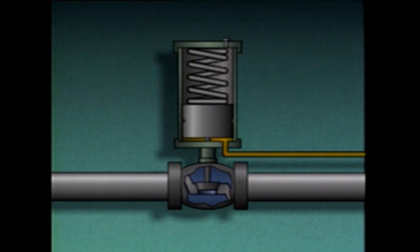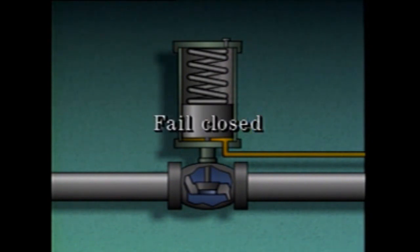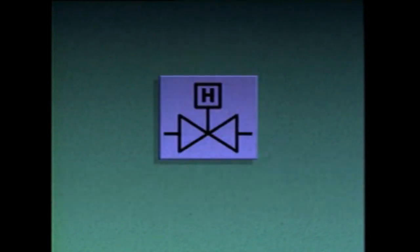If hydraulic fluid pressure is lost, the spring will cause the valve to fail closed. On a piping system diagram, a single-acting hydraulic actuator may be represented by this symbol.